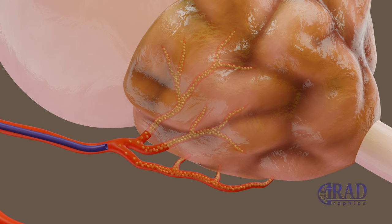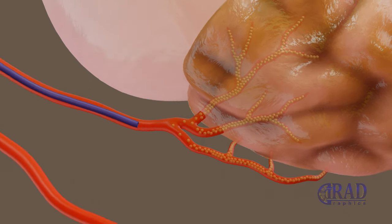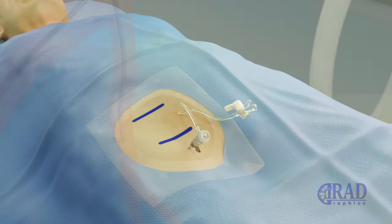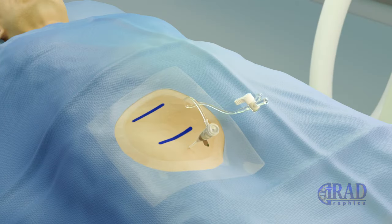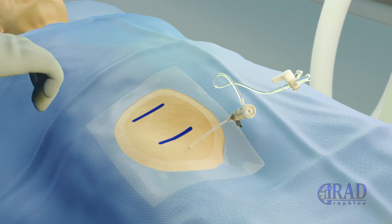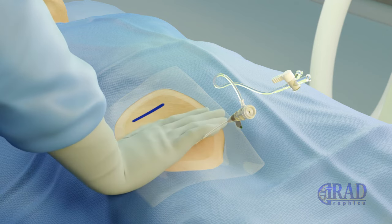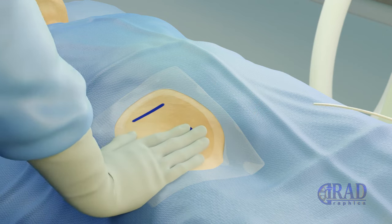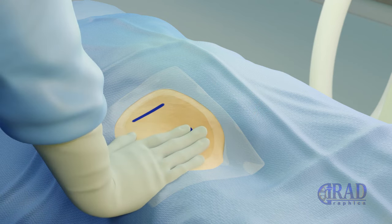Upon completion of the embolization, the microcatheter and catheter are removed. Then, the sheath is slightly pulled back and removed while positioning the hand on the groin and applying manual pressure at the entry site to the artery.